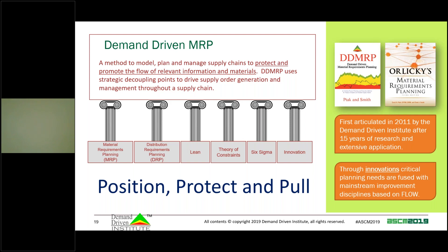Because DDMRP is based on these pillars, you don't have to throw away what you know. MRP — is it valid? Absolutely. The equations are still accurate. But the world around us has changed such that perhaps they don't work quite like we thought. Lean — still valid. Theory of Constraints, Six Sigma — all still valid. Don't throw them away. We're just going to add the innovations and adapt.